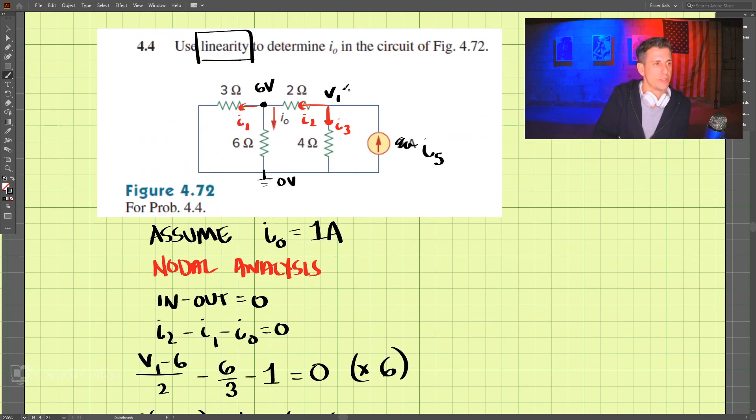Now that we know that this is 12 volts, let's do our KCL at this node here. We're going to do in minus out equals zero. Coming in we have is, this source, and then going out we have i2 and i3 equals zero.